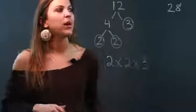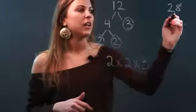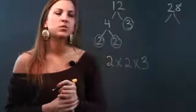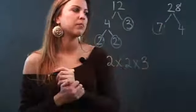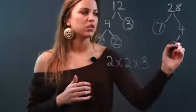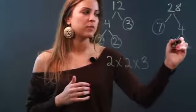Now I'm going to do the prime factorization of 28, and the two numbers that I think of that go into 28 are 7 and 4. And now 7 is prime so I'm going to go ahead and circle that. 4 can be broken down into 2 and 2, and those are both prime so I'm circling them.